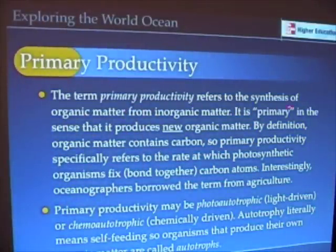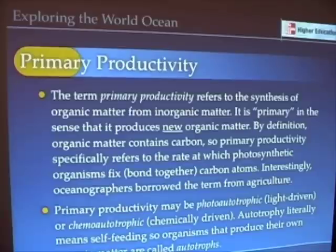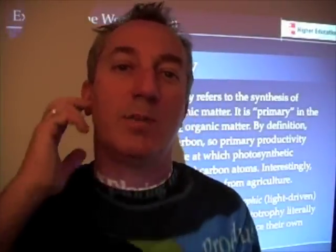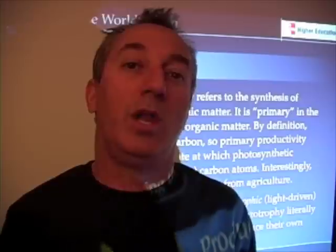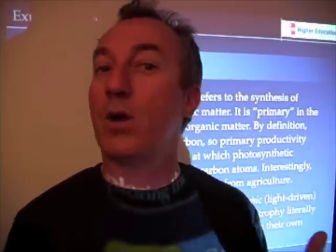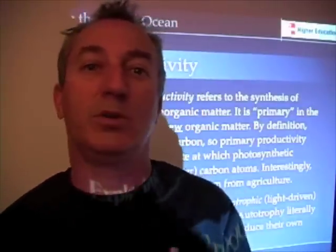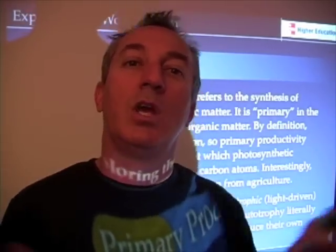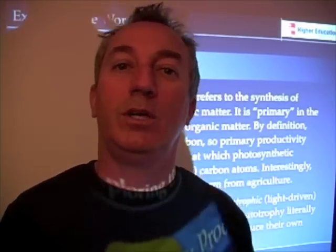Primary productivity is defined as the synthesis of organic matter from inorganic matter — and not necessarily from light, as you'll see in a few minutes. It's primary in the sense that it produces new organic matter: the first productivity of taking non-living stuff and making it living. This term largely comes out of agriculture, and oceanographers borrow from it — talking about the phytoplankton crop just like a farmer talks about a wheat crop or a corn crop. Primary productivity really refers to how much crop is produced over a given season or period of time.